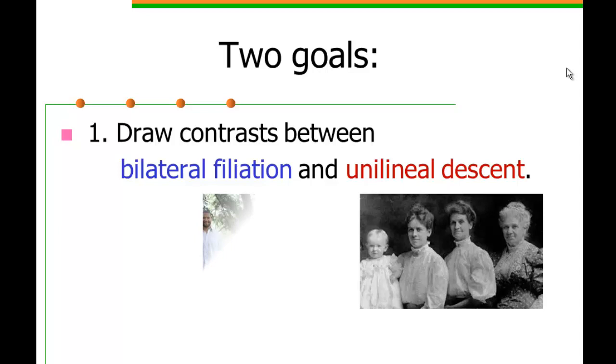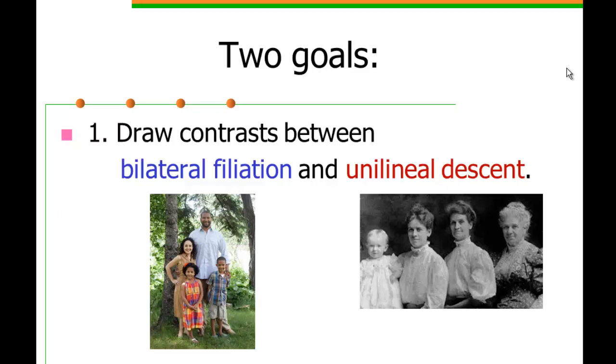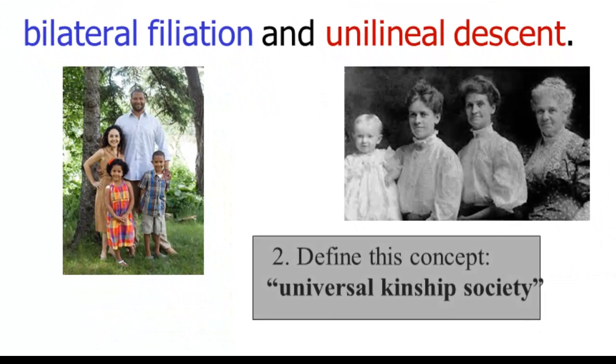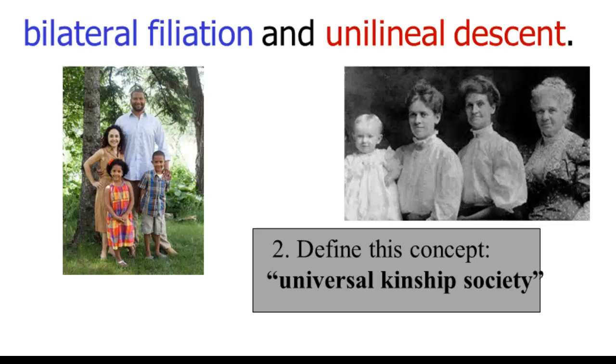Whereas bilateral affiliation refers to the rights that humans in all societies draw from their parents. And this is an important point to note. Even where there's unilineal descent, almost always there's also clear bilateral affiliation. Secondly, we're going to define the concept of a universal kinship society and bring all of this back to Hamilton's rule.